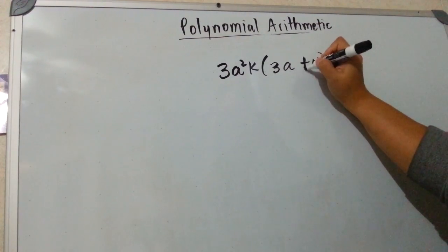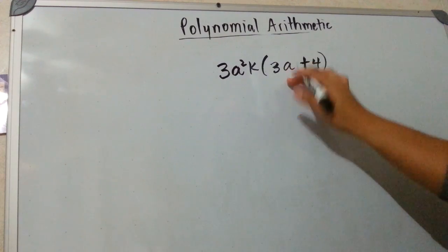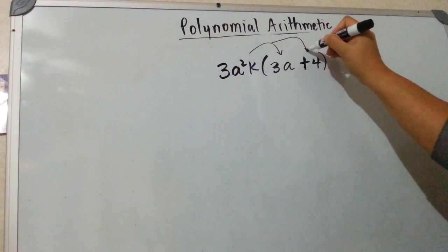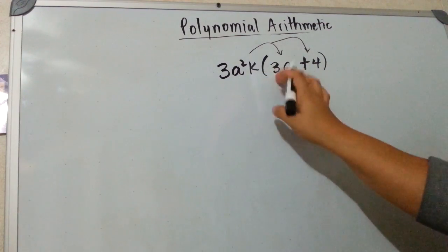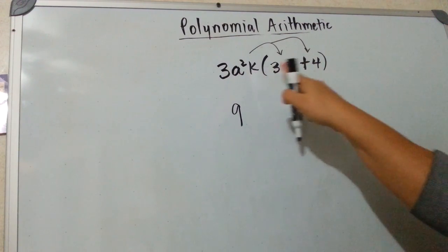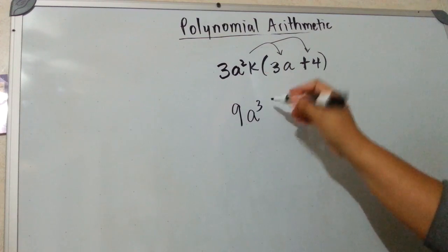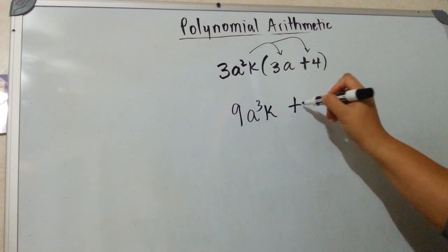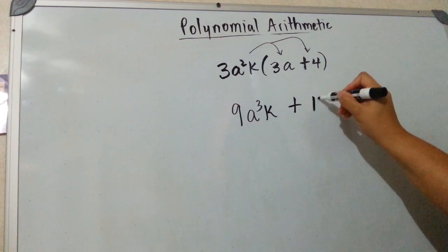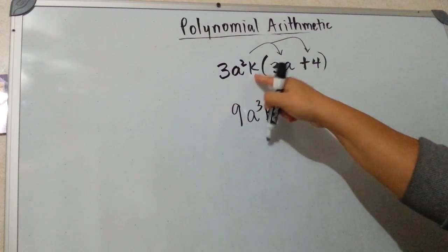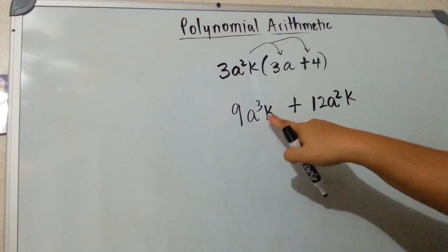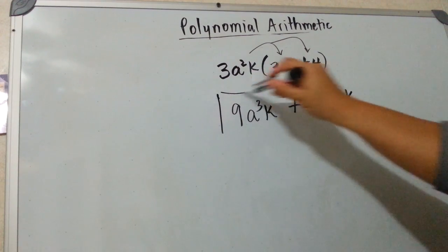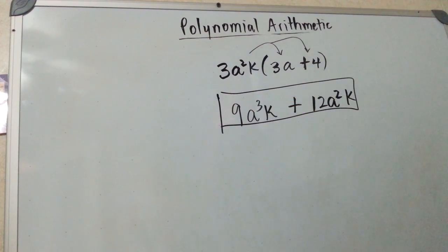In this problem, we have a monomial and a binomial. So what you need to do is you need to distribute into your binomial. And you're just multiplying them. 3 times 3 is 9. a squared times a is a cubed. And there's no other k, so you only have 1k. And then 3 times 4 is 12. This doesn't have any variables, so you have to write these. Take care of these. And these are not like terms, so we would not combine them. And that would be your answer.